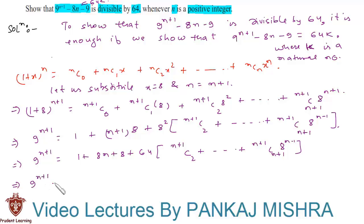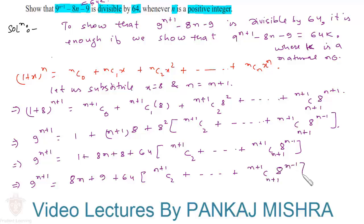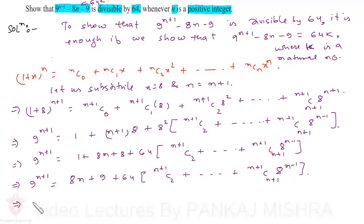This implies 9 raised to n plus 1 is equal to 8n plus 1 plus 9, plus 64 times the quantity (n+1) C 2, plus and so on up to (n+1) C (n+1) times 8 raised to n minus 1.